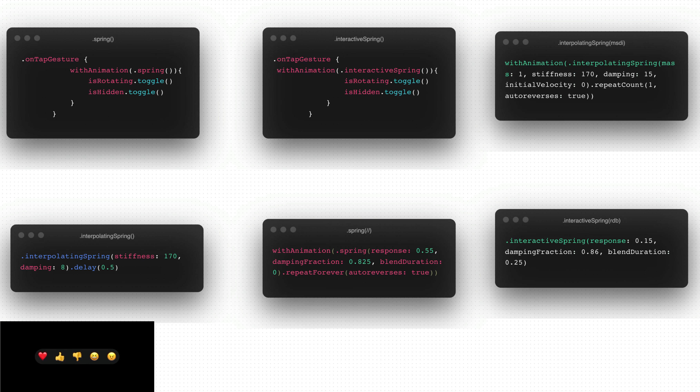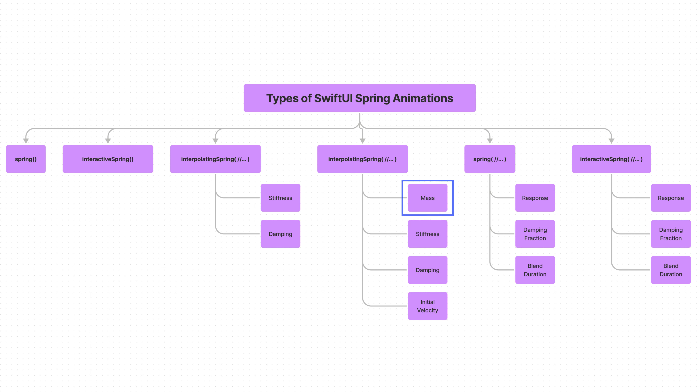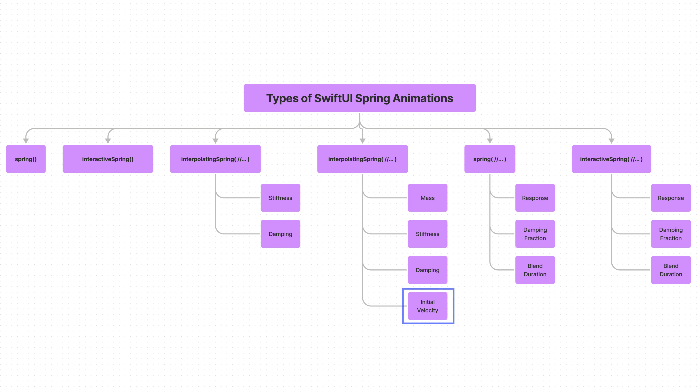After watching this video, you will understand the various kinds of spring animation parameters such as mass, damping, damping fraction, stiffness, initial velocity, and blend duration — and how to apply them confidently without guessing their values.